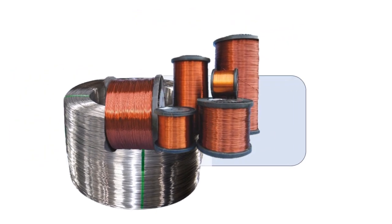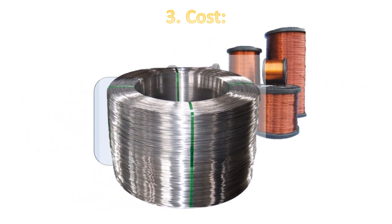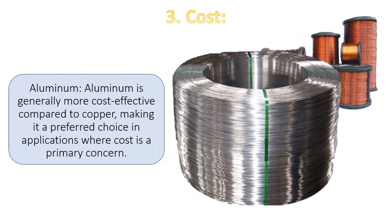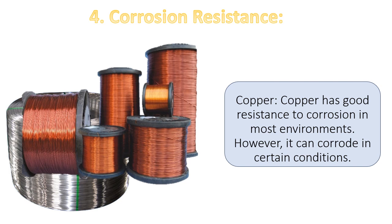3. Cost. Copper is typically more expensive than aluminum, which can significantly impact the cost of electrical components like transformers and motors. Aluminum is generally more cost-effective compared to copper, making it a preferred choice in applications where cost is a primary concern.